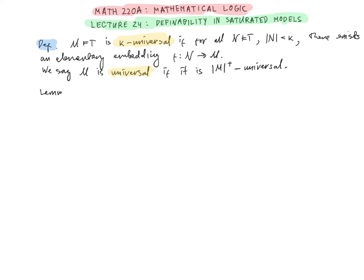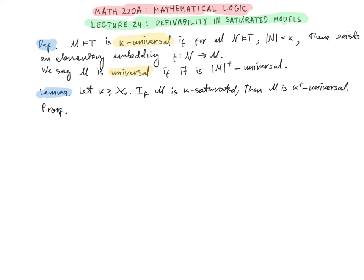Lemma: Let κ be an infinite cardinal. If M is κ-saturated, then M is κ⁺-universal. Proof: Let M be a κ-saturated model. Let N be a model of T with cardinality of N less than or equal to κ. Then we can enumerate the base set: let N_α for α an ordinal less than κ enumerate the base set N of the structure N.